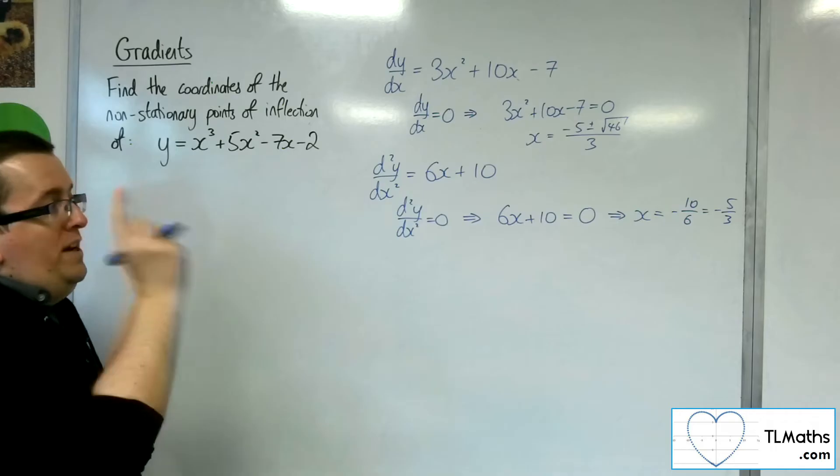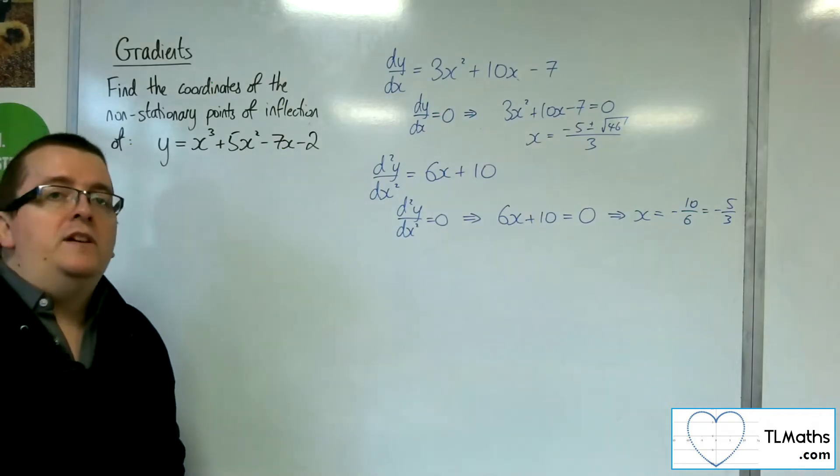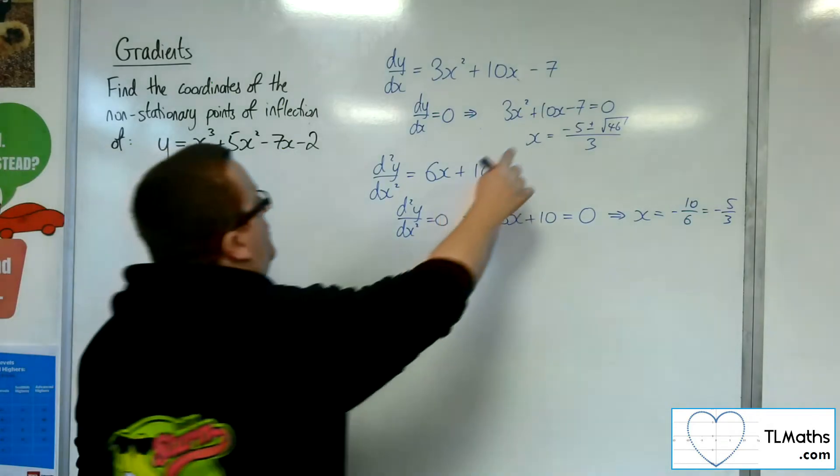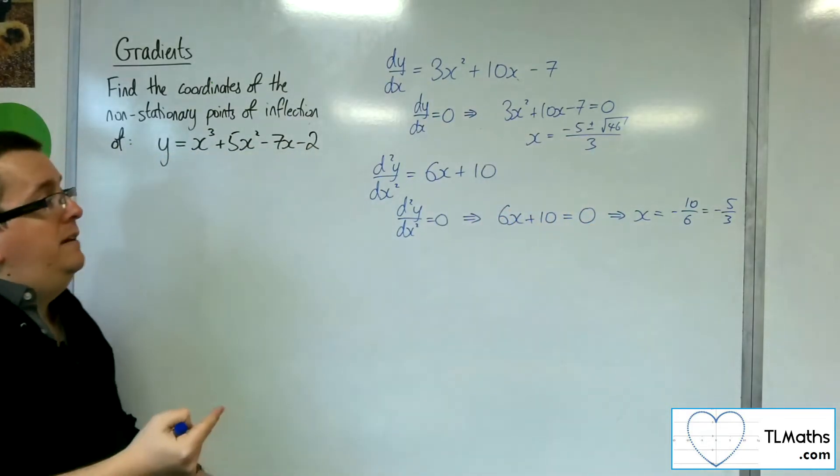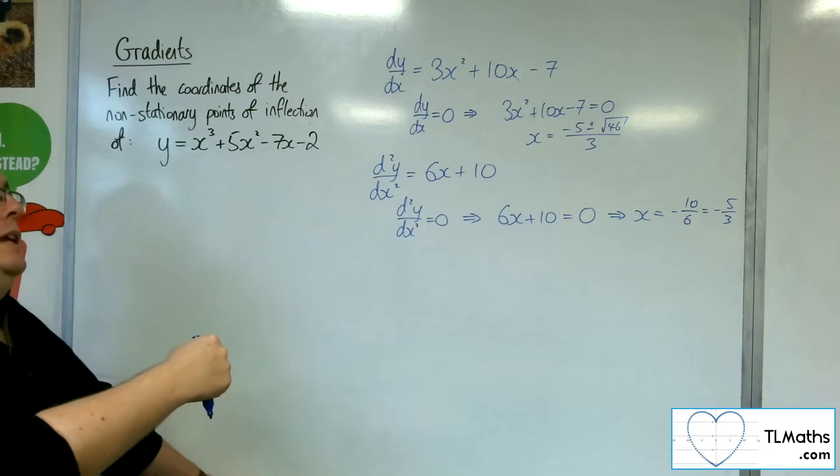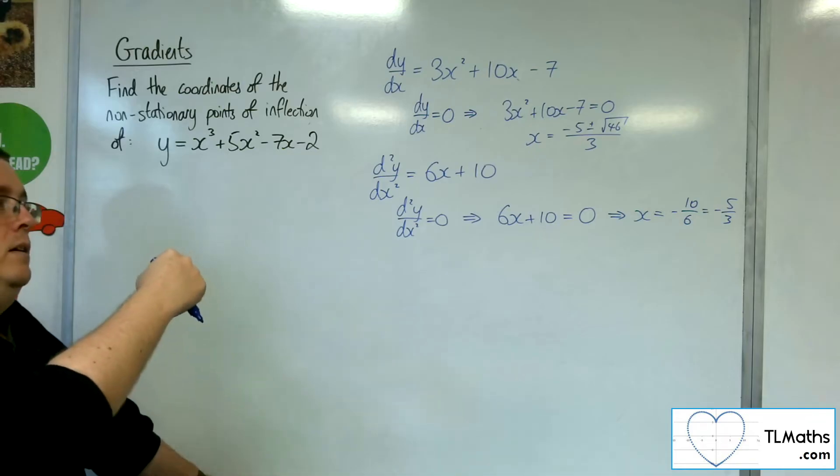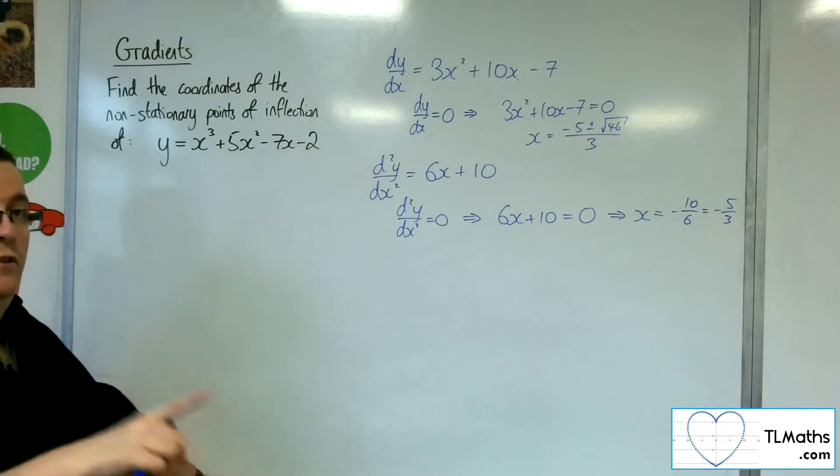We know that x equals minus 5 thirds is not a stationary point. It is not one of those points there. That does mean that the minus 5 thirds should be the only possible point of inflection.